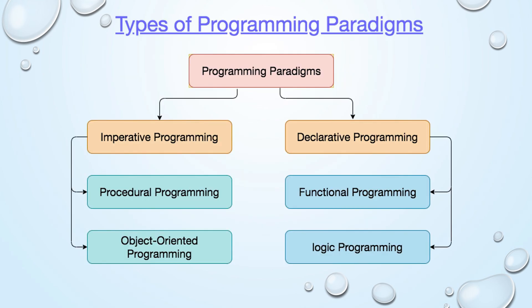Types of programming paradigm. The two main types of programming paradigms are imperative programming and declarative programming. The two types of imperative programming are procedural and object-oriented. There are two types of declarative programming: logical and functional.